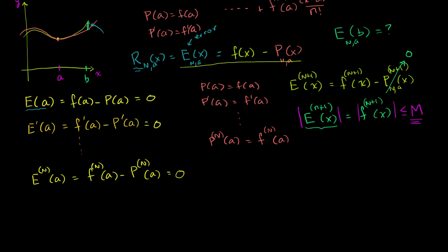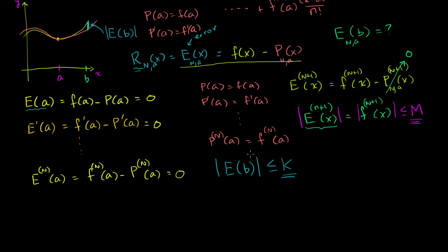So for example, this distance right over here — that is our error at x equals b. And what we really care about is the absolute value of it, because at some points f of x might be larger than the polynomial, and sometimes the polynomial might be larger than f of x. But what we care about is the absolute distance between them.